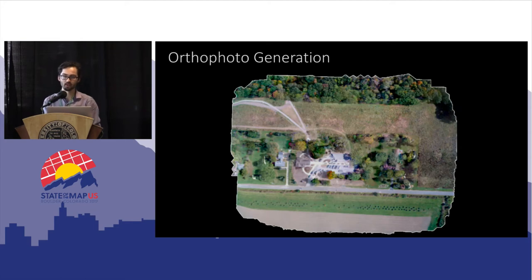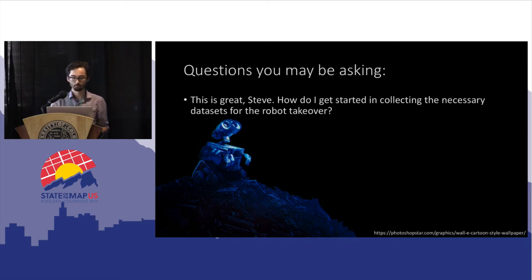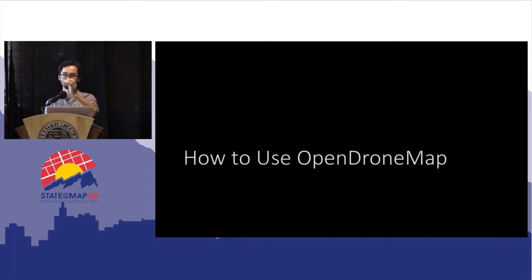Finally, the most important part for many people is generating an orthorectified mosaic. A question you may be asking is: how do I get started collecting the necessary data? You've got to get a drone that can do automated flights, because you have to fly in a grid pattern to get enough overlapping photos to match them. Doing it manually is annoying at best and useless at worst.